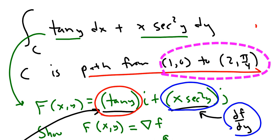So let's go do that. So (1,0) and (2, π/4). So let's do that. So we've got the point (1,0) and (2, π/4).